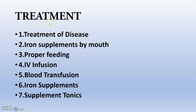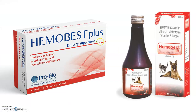Treatment: first of all, if there is any underlying disease, we have to treat that disease, and the animal will regain its body condition. Iron supplements by mouth, proper feeding, IV infusion of supplements, blood transfusion in severe cases, iron supplements and supplement tonics. One example is Hemobest Plus, a dietary supplement based on folic acid, iron sulfate, and vitamins. Feeding the animal this hematonic syrup will sometimes prevent anemia.